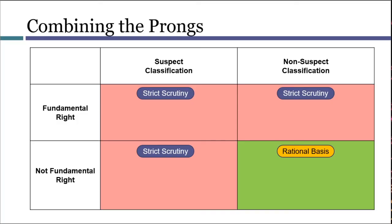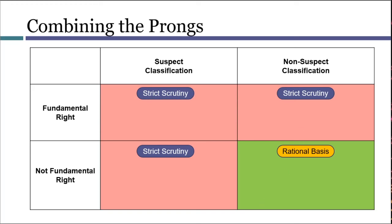But as always, having a few reliable examples can be really helpful. This table will combine some of our prototype examples. Laws that involve suspect classifications will get strict scrutiny, and so will laws that unequally distribute fundamental rights — meaning it's possible for a law to receive strict scrutiny for more than one reason. Strouder v. West Virginia involved the right to serve on a jury, which we would consider a fundamental right today, and it was a right restricted on the basis of race. Loving v. Virginia involved the right to marry — part two of that opinion said that was a fundamental right — and it also involved an unequal distribution of rights on the basis of race, with part one explaining that would get strict scrutiny.